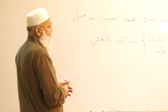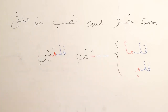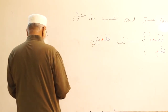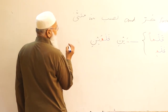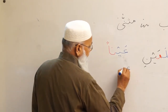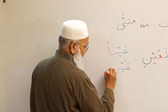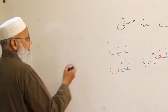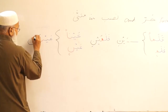To summarize: qalamun is a pen in the nasab form, qalamun is a pen in the jar form, and the musanna form for both is qalamaini — two pens in nasab or jar form. Then ainun in the nasab form is aynan, in the jar form is aynin, and the musanna for both is aynaini.